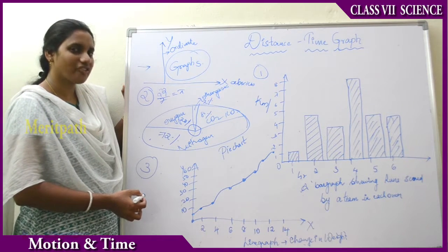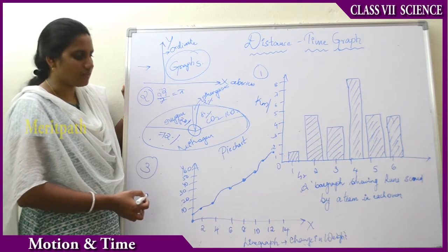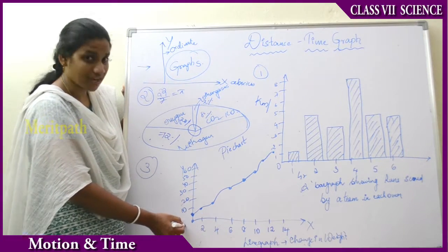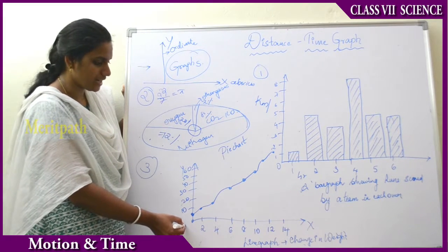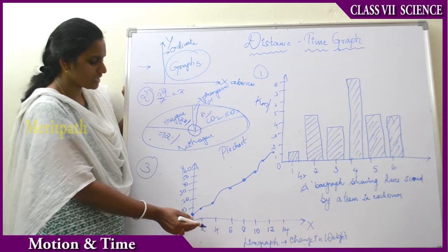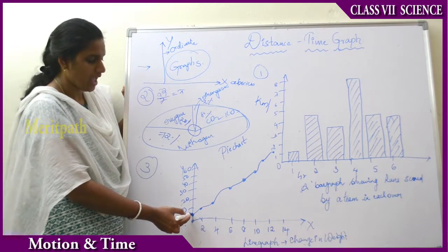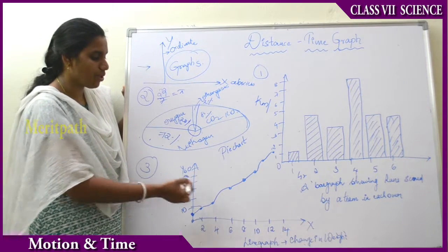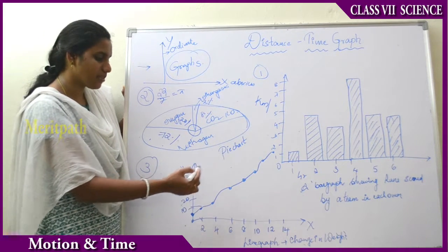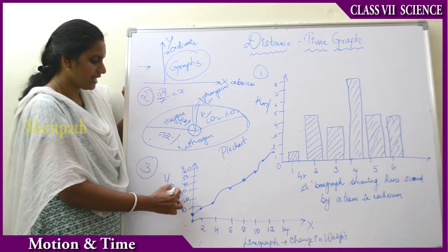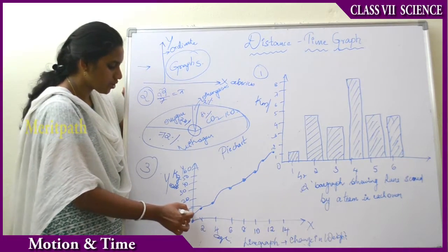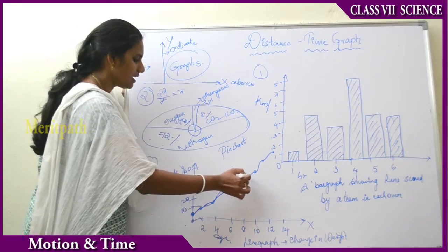Now coming to the third graph — line diagrams. Here I have plotted the changes in the weight of a person based upon his age. At around 2 years of age he is about 9 kg, at 4 years about 10 kg, and up to 14 years of age around 60 kg. Plotting these values gives us a line diagram. If the line crosses the origin it is said to be a straight line.